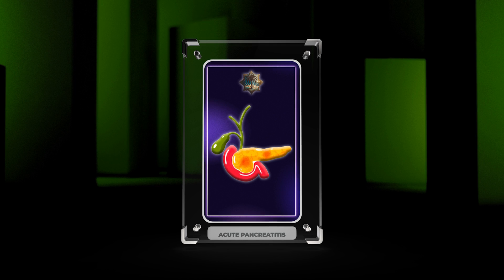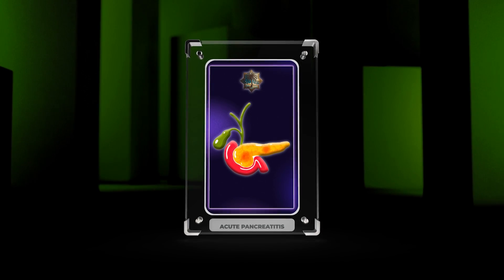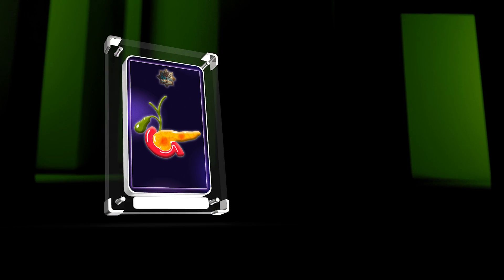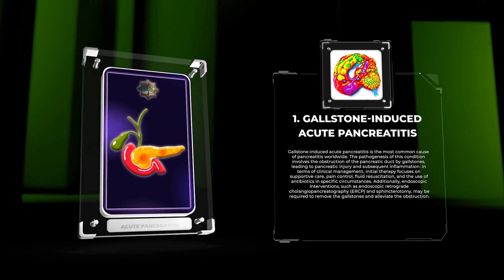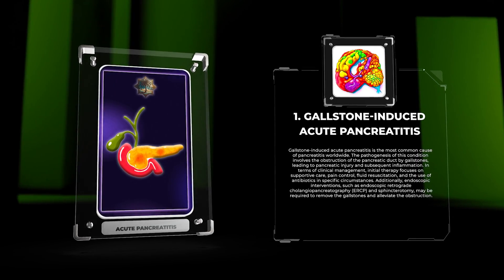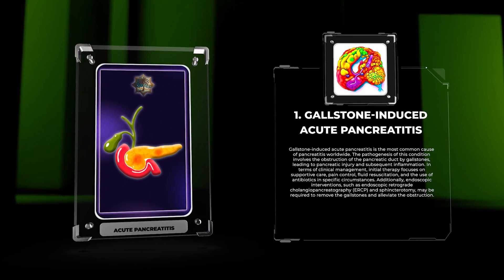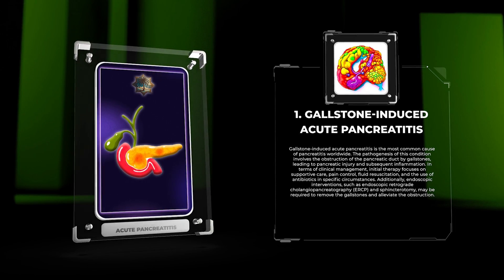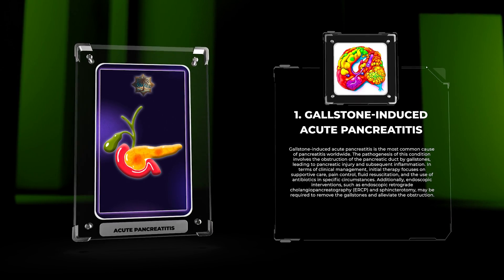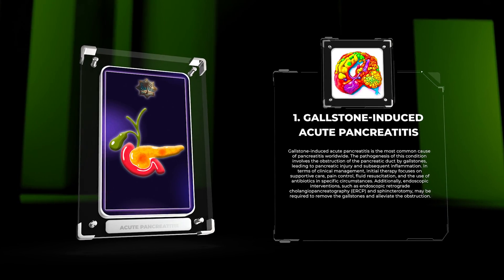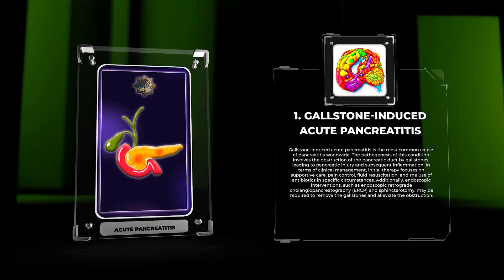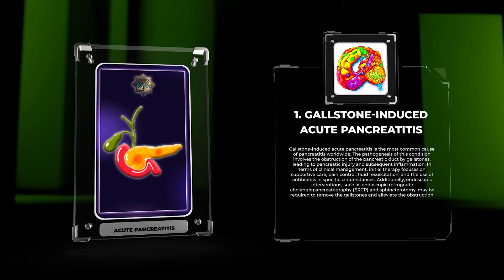Throughout this lecture, we will explore the pathogenesis, clinical management, and emerging therapies for different etiologies of acute pancreatitis. Gallstone-induced acute pancreatitis is the most common cause of pancreatitis worldwide. The pathogenesis involves obstruction of the pancreatic duct by gallstones, leading to pancreatic injury and subsequent inflammation. Initial therapy focuses on supportive care, pain control, fluid resuscitation, and the use of antibiotics in specific circumstances.